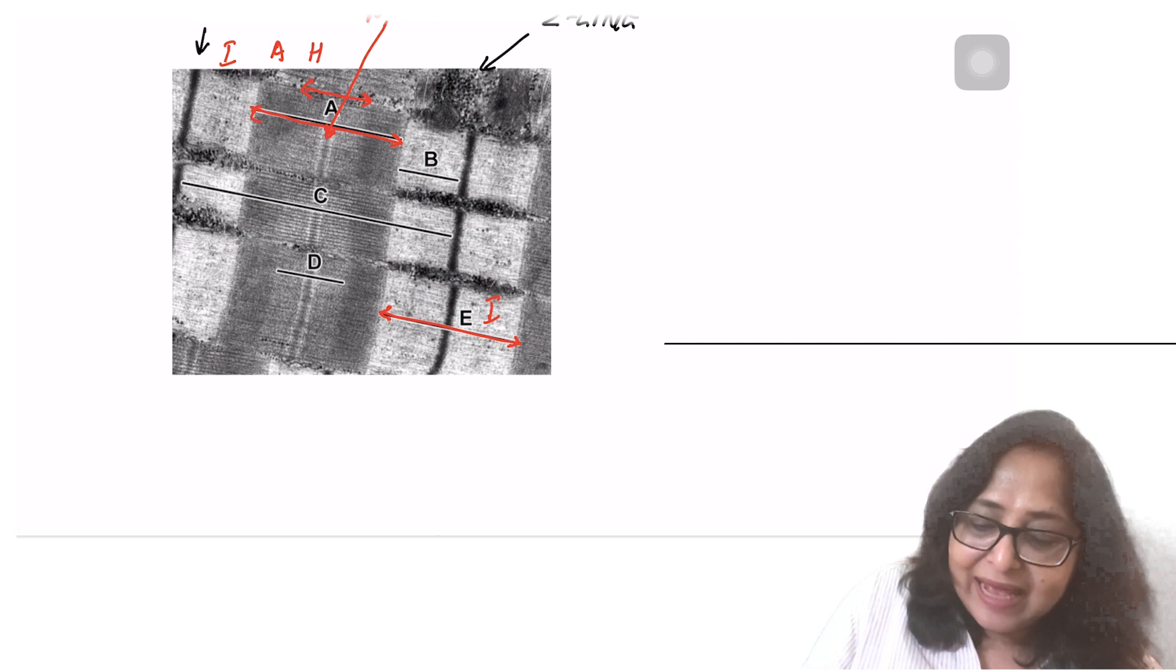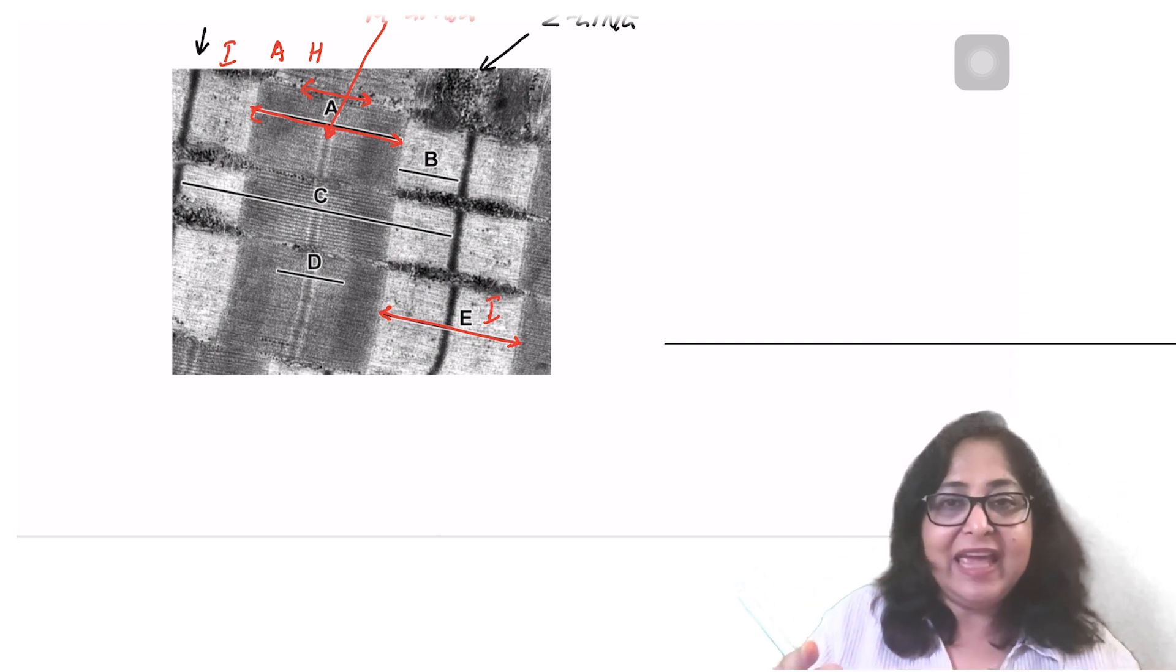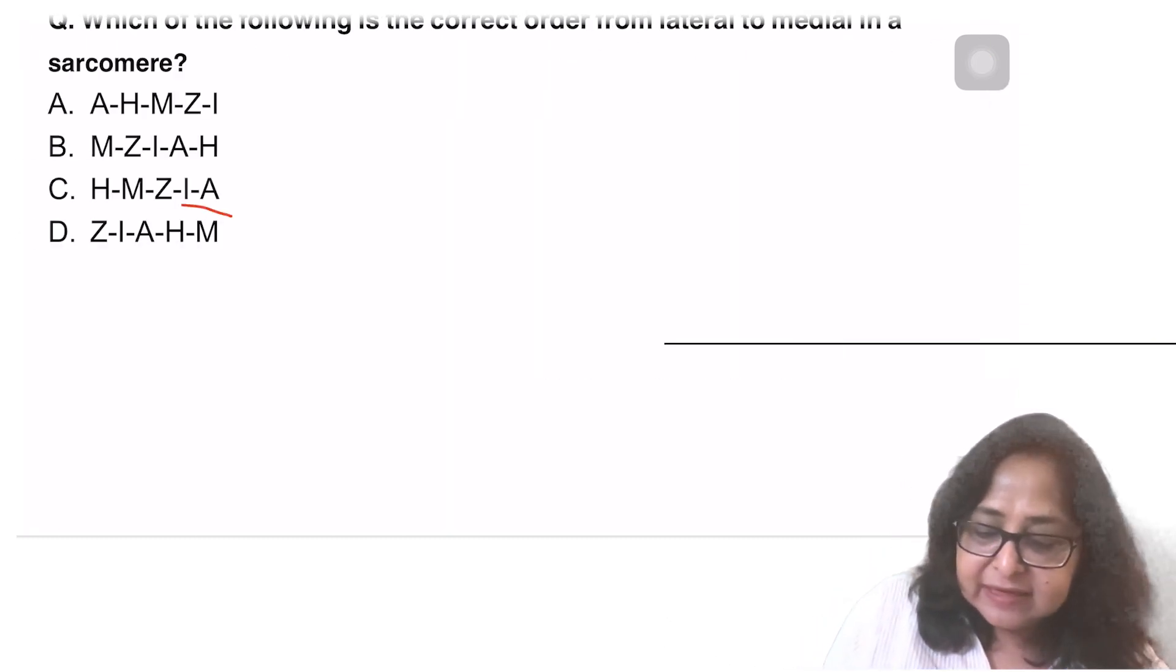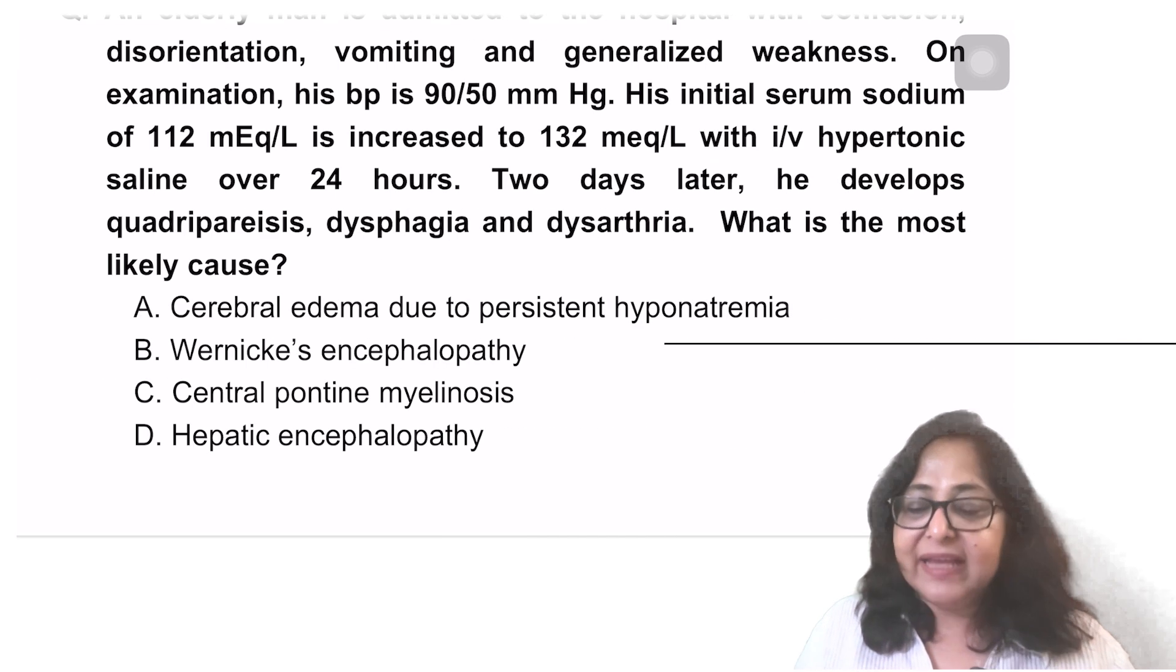And finally, right in the middle of the sarcomere, you have what is known as the M line. So from lateral to medial, this is going to be Z I A H M. The answer here is D.